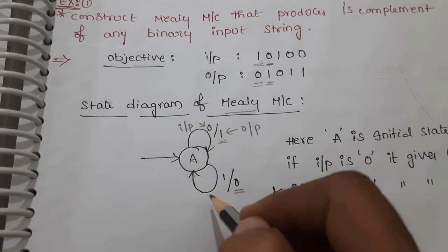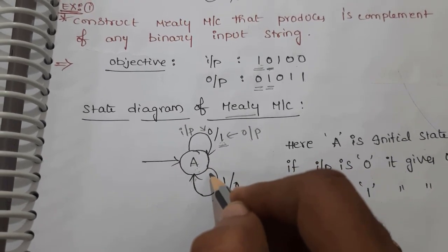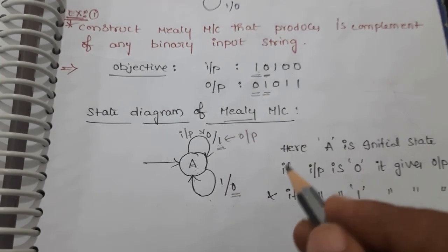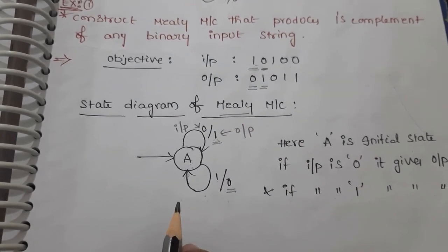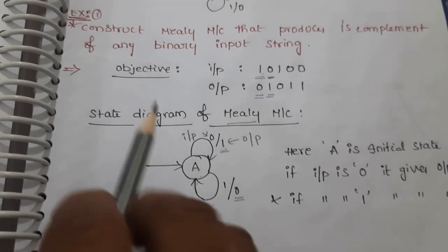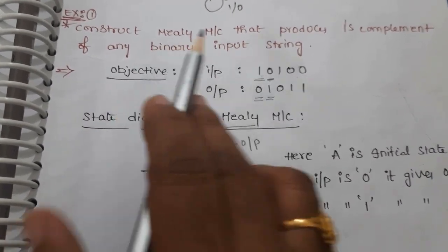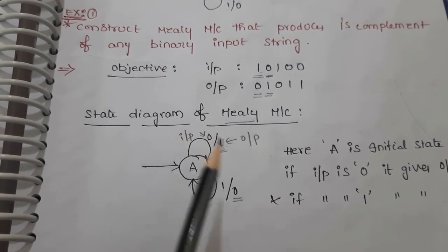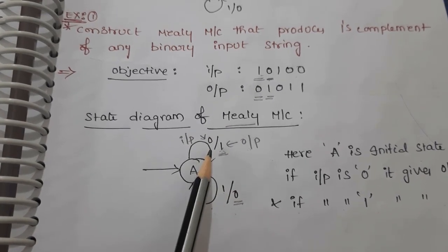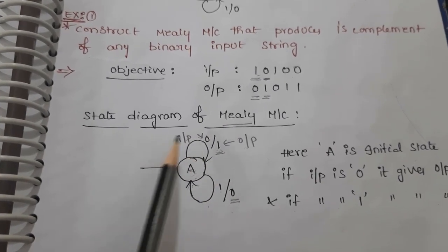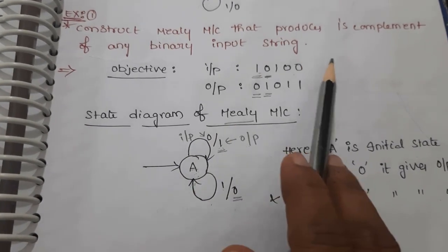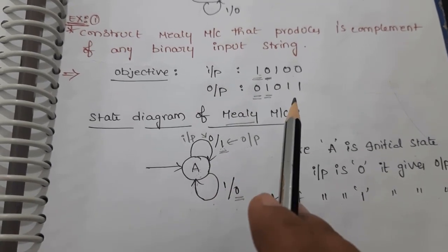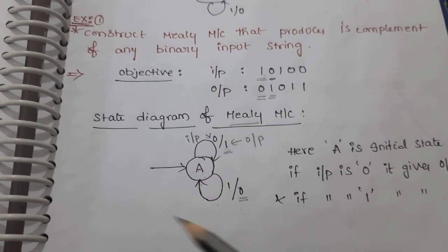So this is the state machine which gives the one's complement of any binary input string. Like this we can construct state machines — here it is a Mealy machine. We can construct different kinds of state machines; in a Mealy machine, outputs are associated with the inputs. This finite state machine converts the input binary string to its one's complement form.